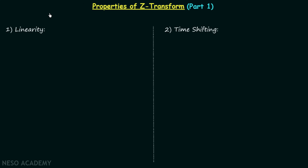We are going to have a discussion on two properties of the Z-transform. The first property is the linearity property and the second property is the time shifting property. We will begin our discussion with the linearity property.